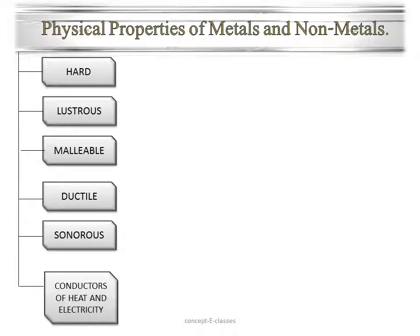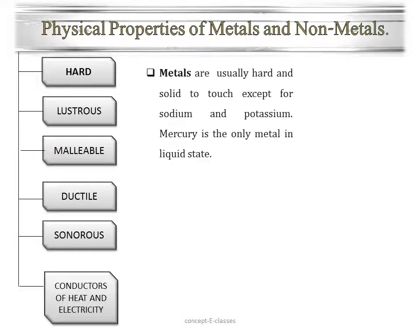Now let us study the physical properties of metals and nonmetals. We studied that metals are those materials which are hard, lustrous, malleable, ductile, sonorous, and good conductors of heat and electricity. Whereas nonmetals are those elements which do not possess any of these metallic characteristics. Let us discuss each of these properties in detail.